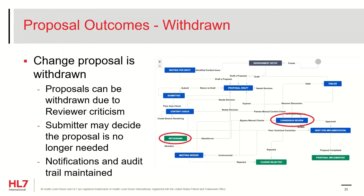During consensus review, in the face of reviewer criticism and negative comments, you may decide that the change proposal is improper and should not be implemented. As the submitter, you can move the ticket into the Withdrawn state by selecting the Workflow button at the top of your proposal and then selecting Abandon. As with all proposals, the ticket with all of the comments will be archived for future reference.